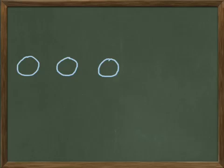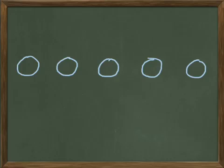Let's put another circle next to those. How many circles do we have now? One, two, three, four. Now we put another circle next to those. How many circles do we have now? One, two, three, four, five. So far so good. Let's put another row of circles down below here, down here to the left. Now how many circles do we have on our board? We've got one, two, three, four, five, six.